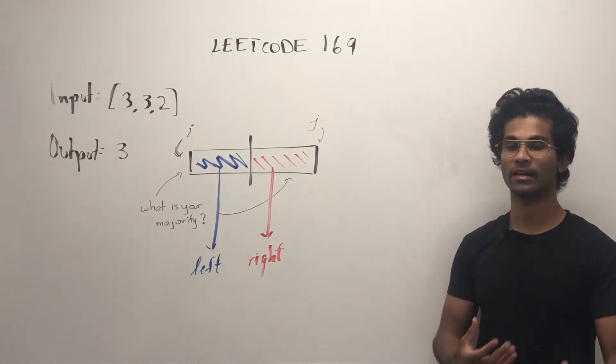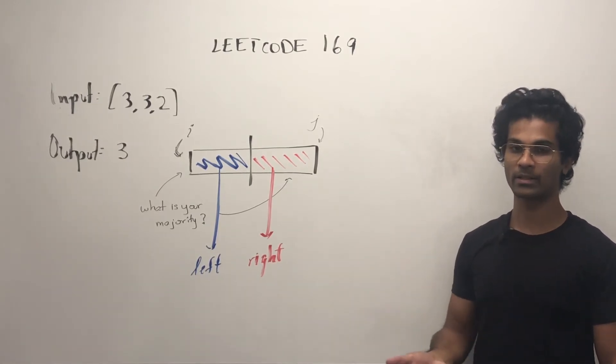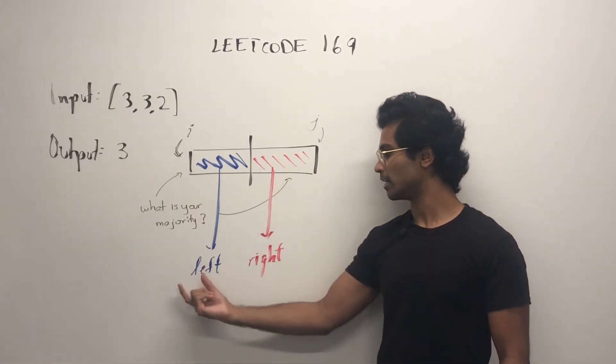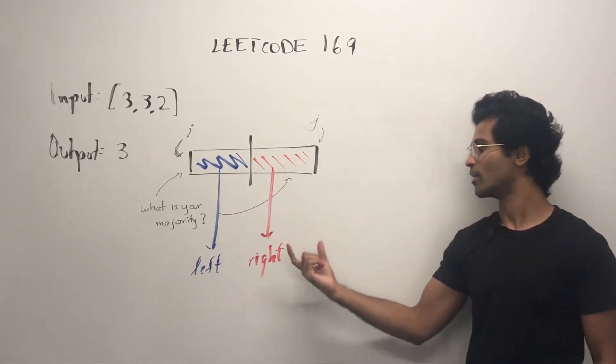We recursively ask the left and right side, hey, can you guys tell me your majority element? And both sides will do their job, and the left will return left, the right will return right.